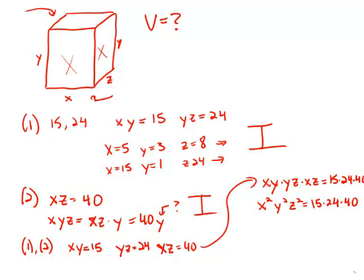Well, now, if we take a square root of both sides, x times y times z equals the square root of 15 times 24 times 40. And this product, x times y times z, that's length times width times height. That is the volume.